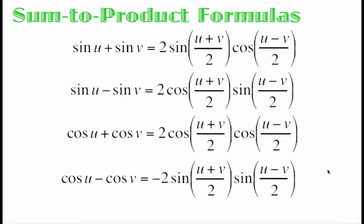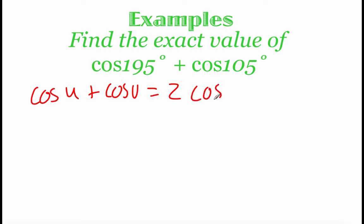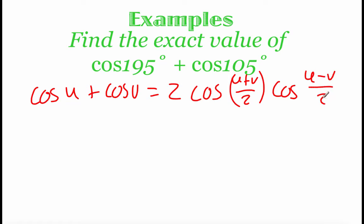The next set of formulas are called sum to product formulas. Again, like the name implies, we're going to have some sort of sum — adding or subtracting — and we're going to rewrite that as a multiplication problem. These formulas are on your trig sheet on the bottom right hand corner, so you shouldn't have to copy those down. Looking at the first example, we've got cosine of 195° plus cosine of 105°. The formula cosine u plus cosine v equals 2 times cosine of ((u plus v)/2) times cosine of ((u minus v)/2).